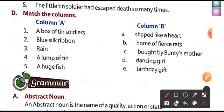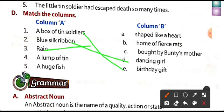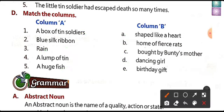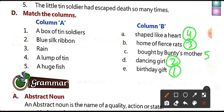Next is match the column. A box of tin soldiers matches with birthday gift. Blue silk ribbon matches with dancing girl. Rain matches with a lump of tin. Home of fierce rat matches with the drain. A huge fish was bought by Bunty's mother. Match them like this in your book.